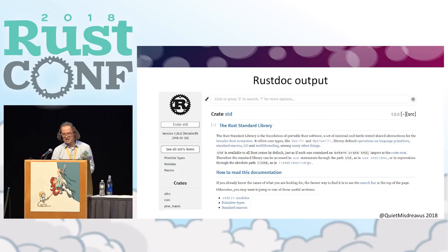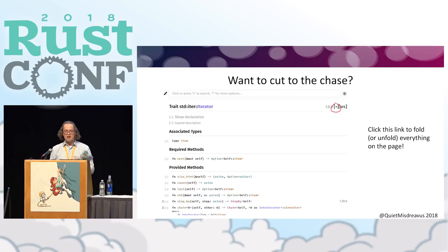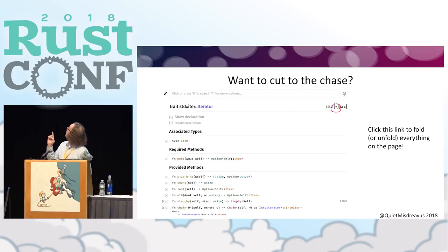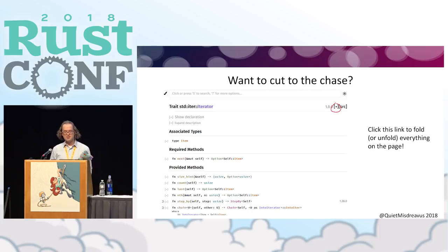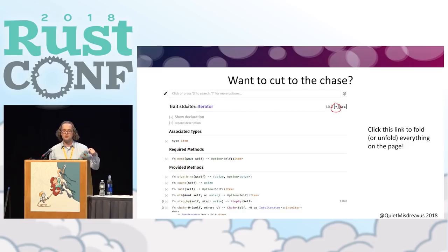Getting into a few special things you can do with it: a lot of the handwritten docs that you have in there, RustDoc has the ability to fold those up in case you just want to see the listing of things. There's a button in the corner that will fold up everything on the page — not only the handwritten prose, but also the type declarations. Everything that goes into a trait will just really condense, so you can see the methods and traits and just cut to the chase.